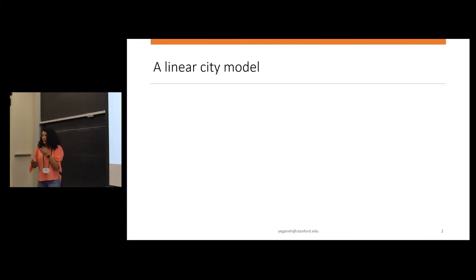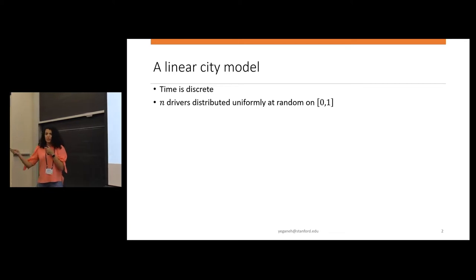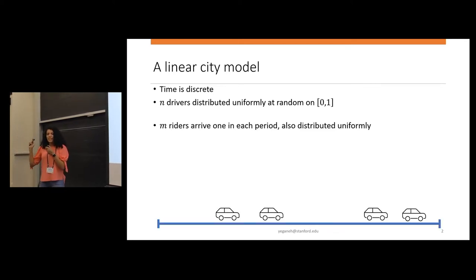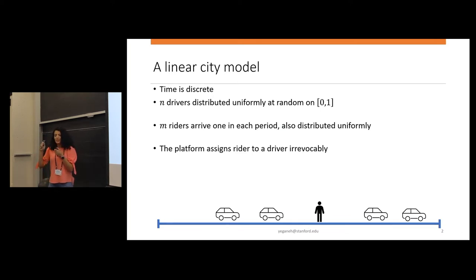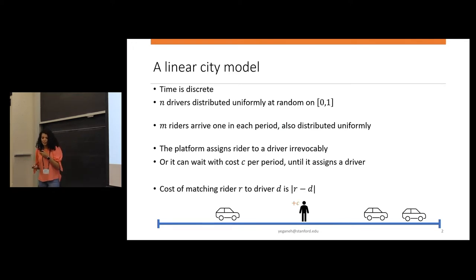Let me specify the exact model we are using here. This slide is going to be dense, but this is all of the model, so please bear with me and ask any questions if you have about the model. We have a discrete time horizon, and in the beginning there are n drivers located uniformly at random on a zero-one interval. At each discrete time, a rider arrives, and in total we will have m riders. Also, their location is distributed uniformly at random. When a rider arrives, the platform can do one of two things. It can either match the rider immediately and irrevocably, so that both of them now disappear, or it can wait for a cost of C to match it later.